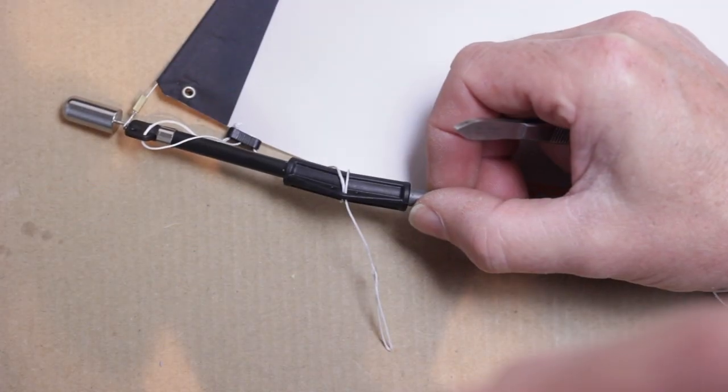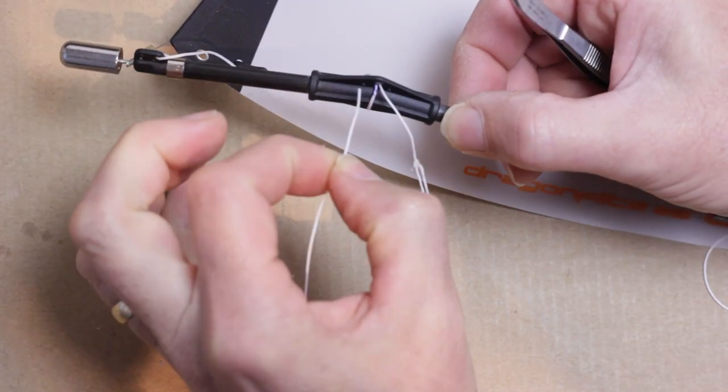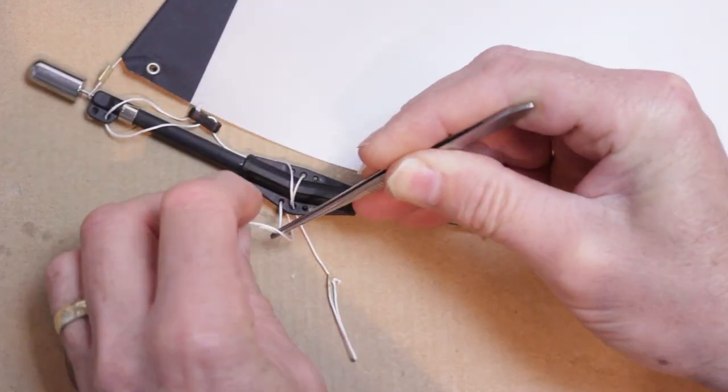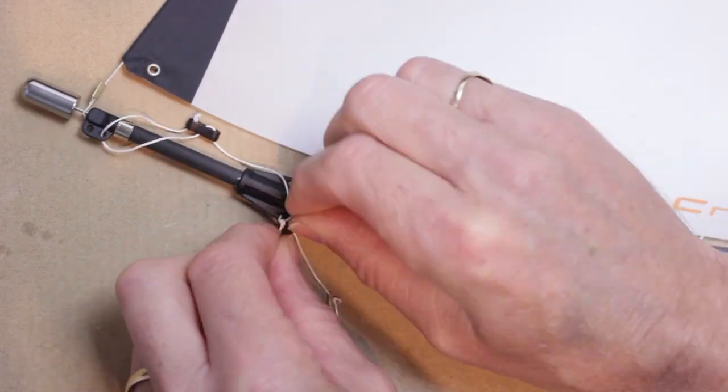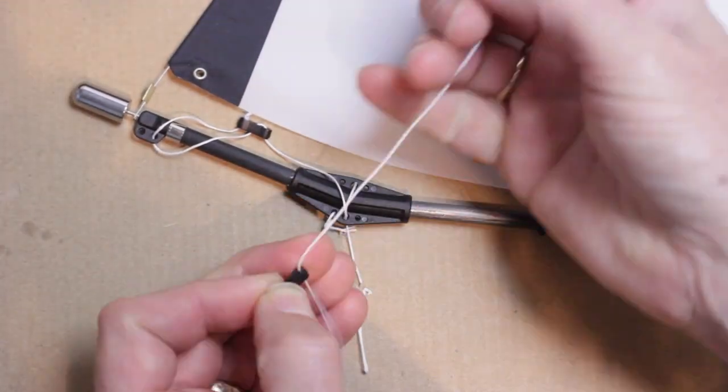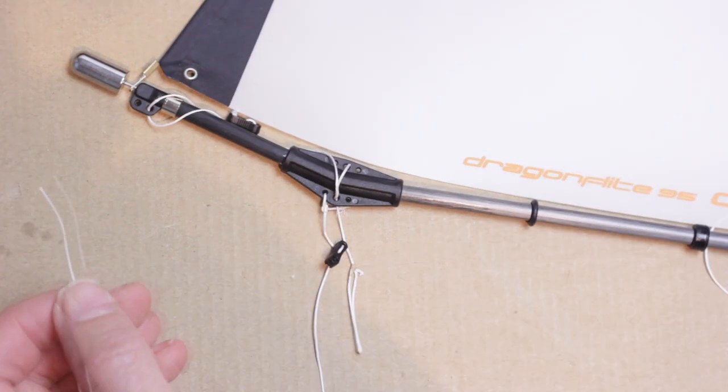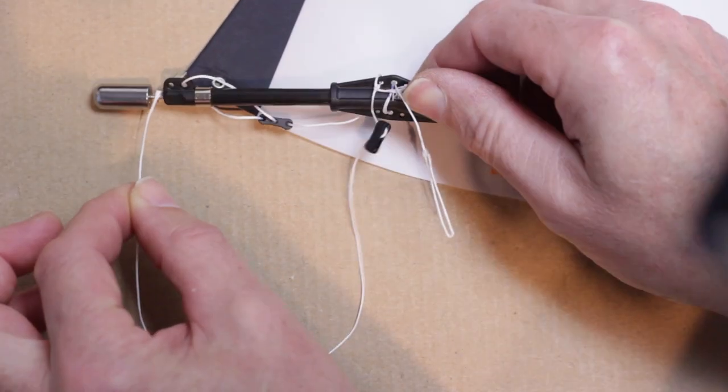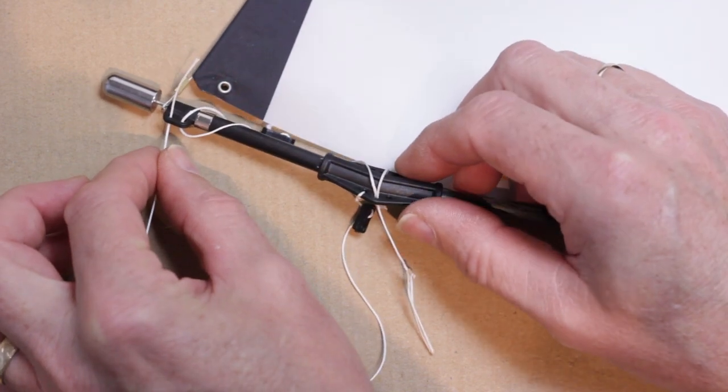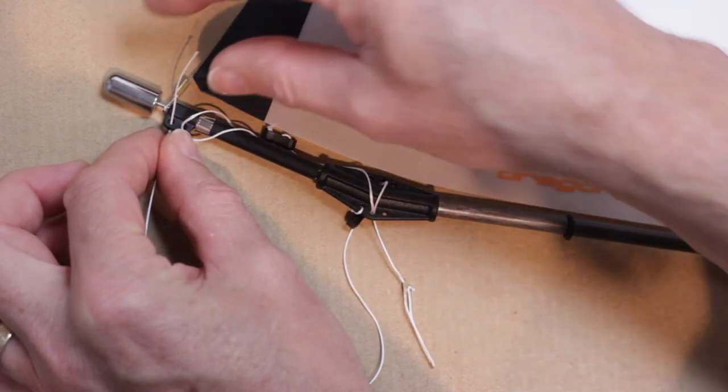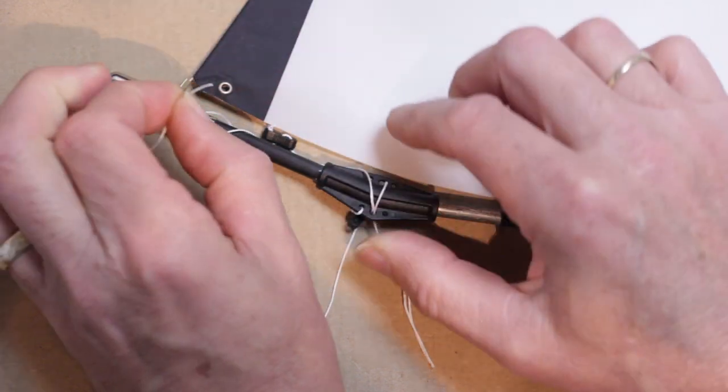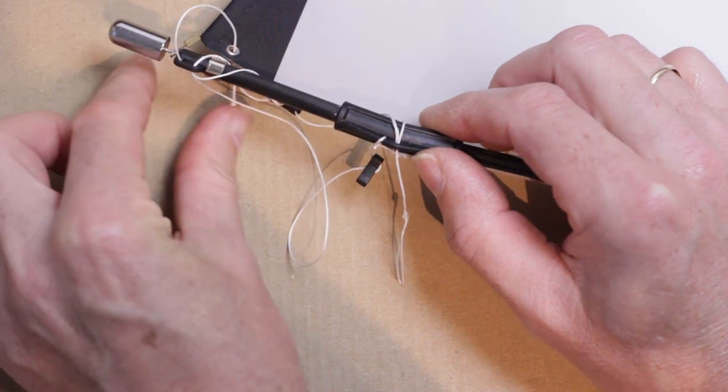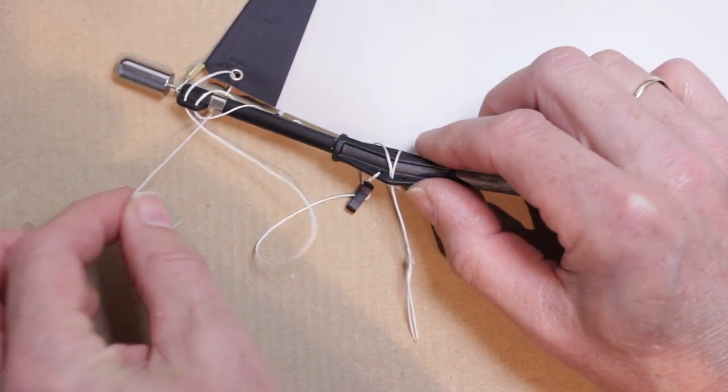Push a 250mm length of dyneema to form the jib Cunningham. Tie one end to the front lower hole of the tube joiner and then through the first two holes of the bousy. Then take it forwards and through the front eye of the boom end fitting. Then take it up and through the eye of the tack of the jib and then straight back down through the front eye of the boom end fitting again.